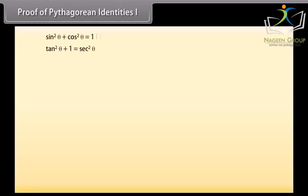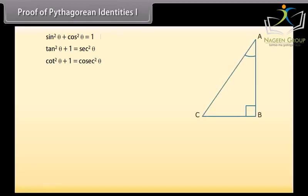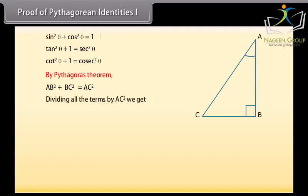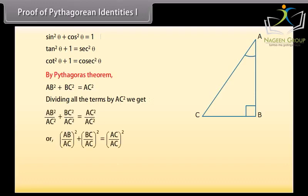Proof of Pythagorean Identity 1: Now we will prove one Pythagorean identity and use it to prove other identities. For that we take a right angle triangle ABC. By Pythagoras theorem, AB square plus BC square is equal to AC square. Now dividing each term by AC square, we can write it as AB upon AC whole square plus BC upon AC whole square equals AC upon AC whole square.